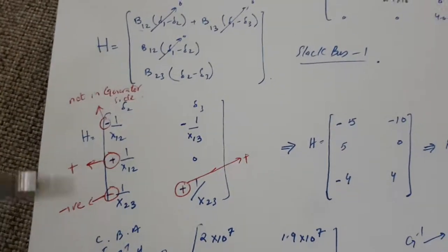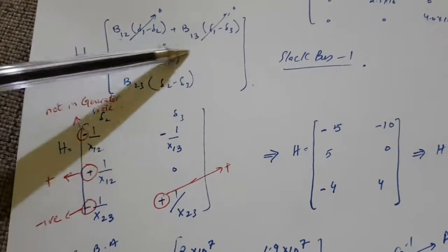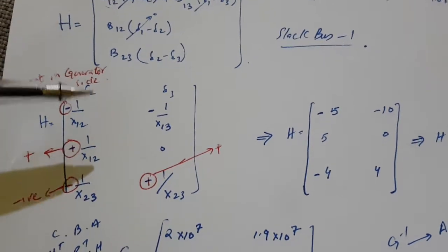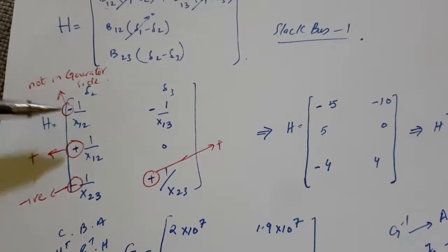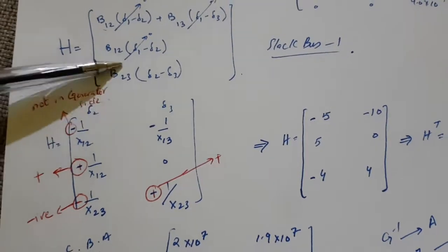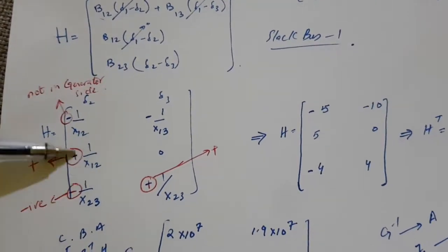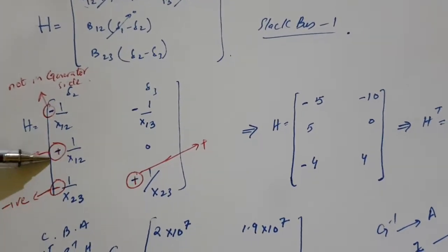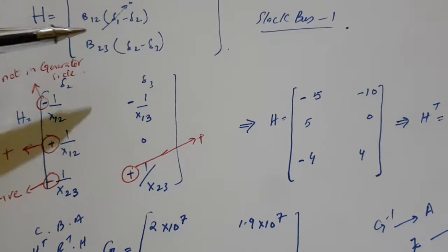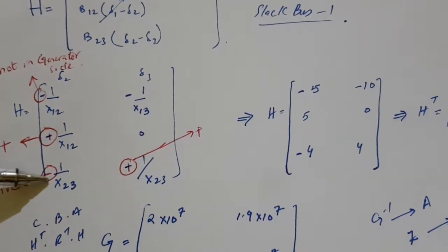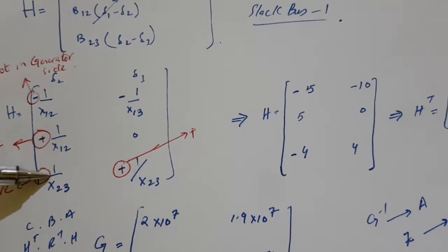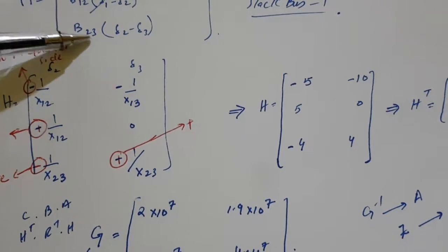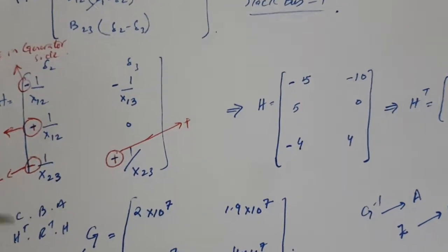Be careful: when talking about the generator, do not apply this sign inversion. For the generator, keep the same signs. So for line 1-2, it must be (-1/x12) but since the flow is from 2 to 1, I have taken it positive. Similarly, this must be positive but I have taken it negative because the flow is from 3 to 2. That is why I have changed these signs.